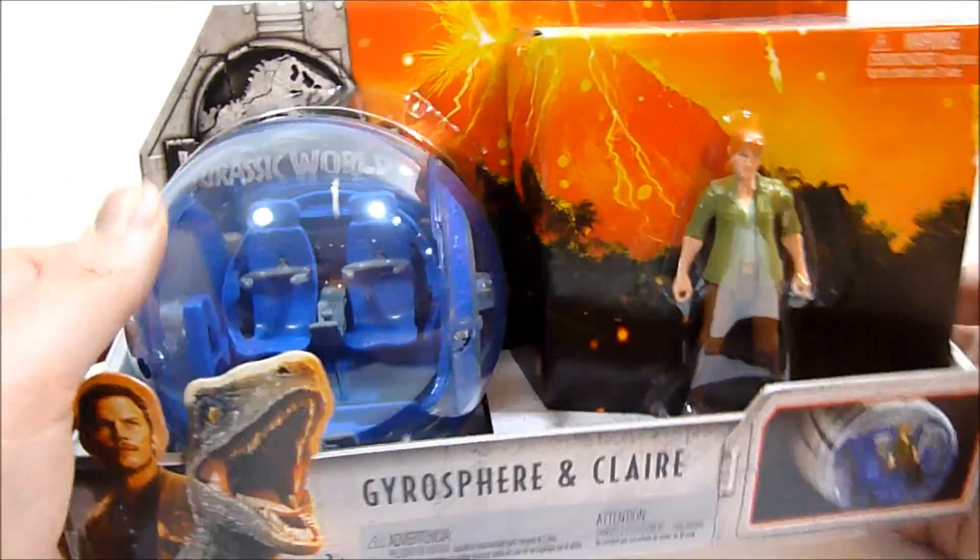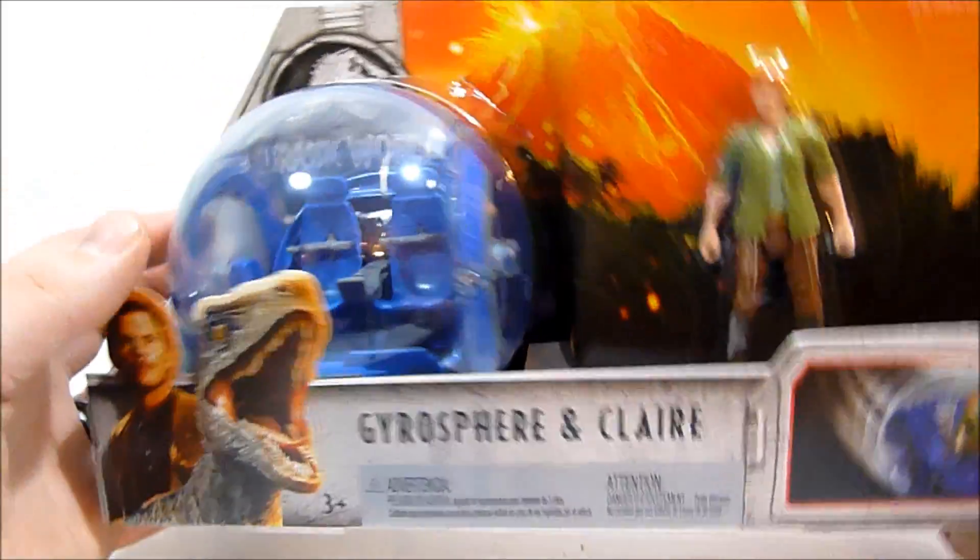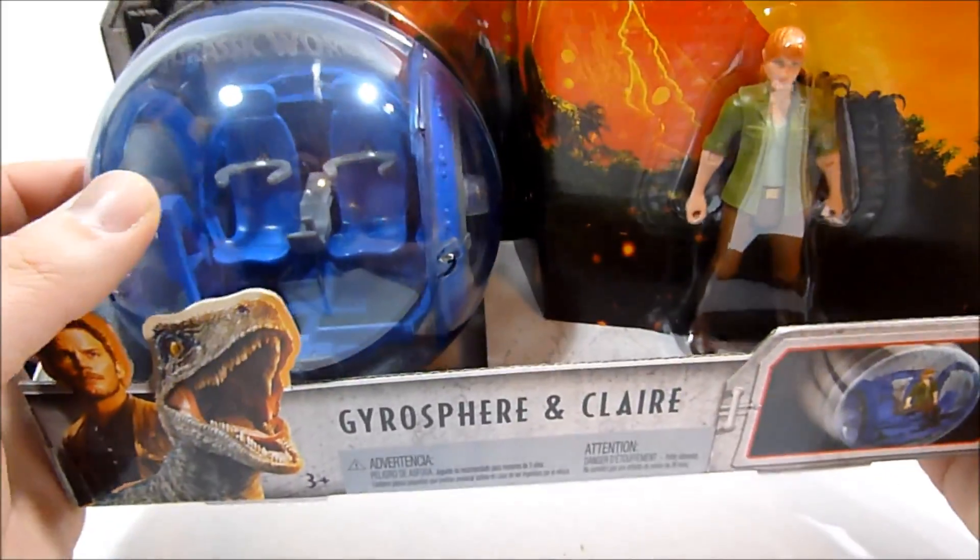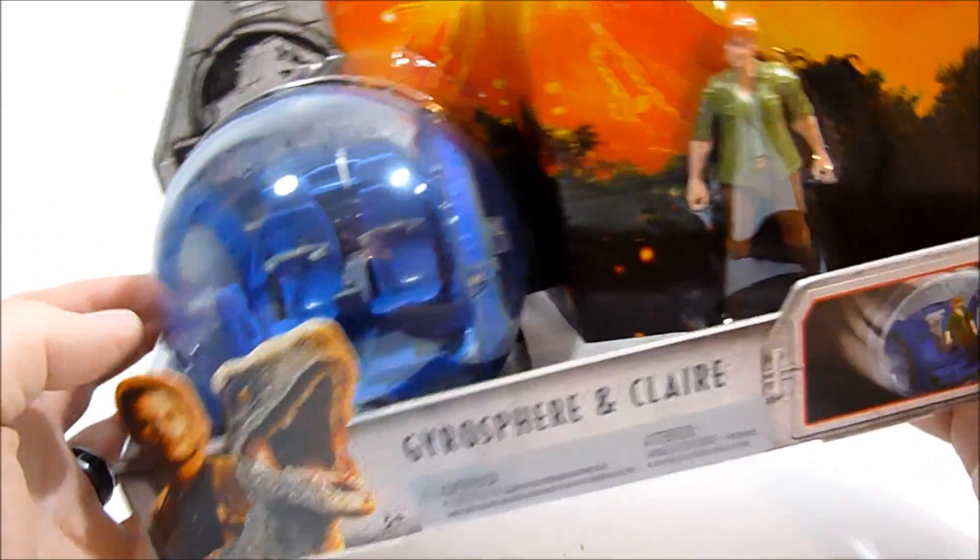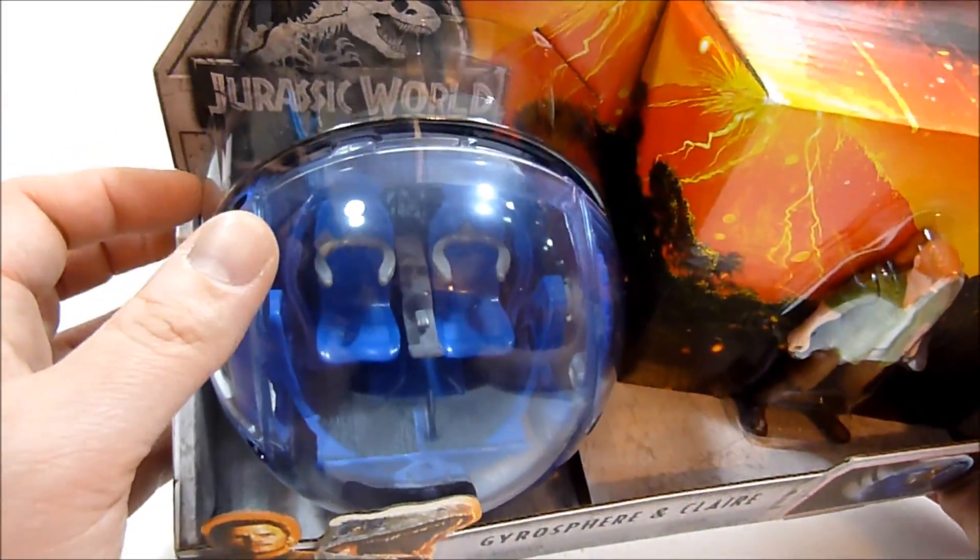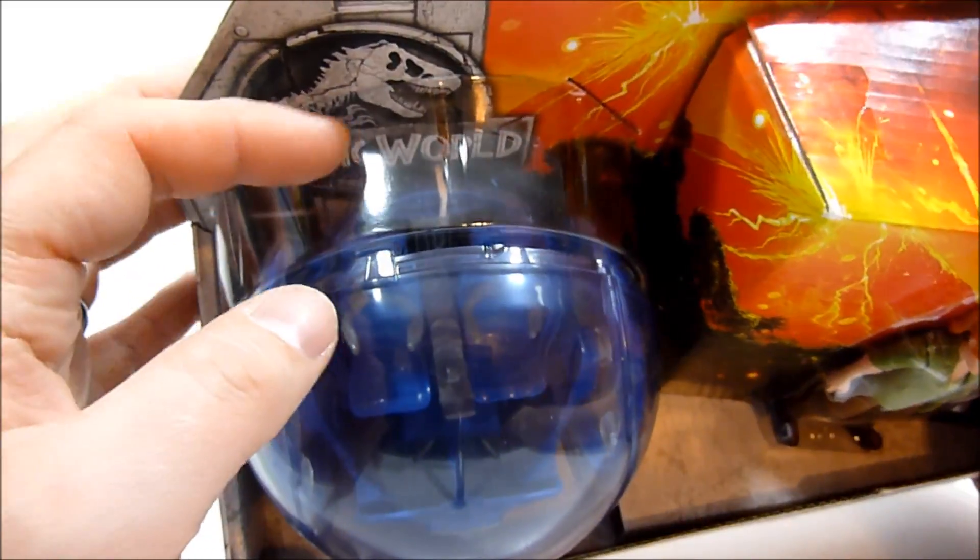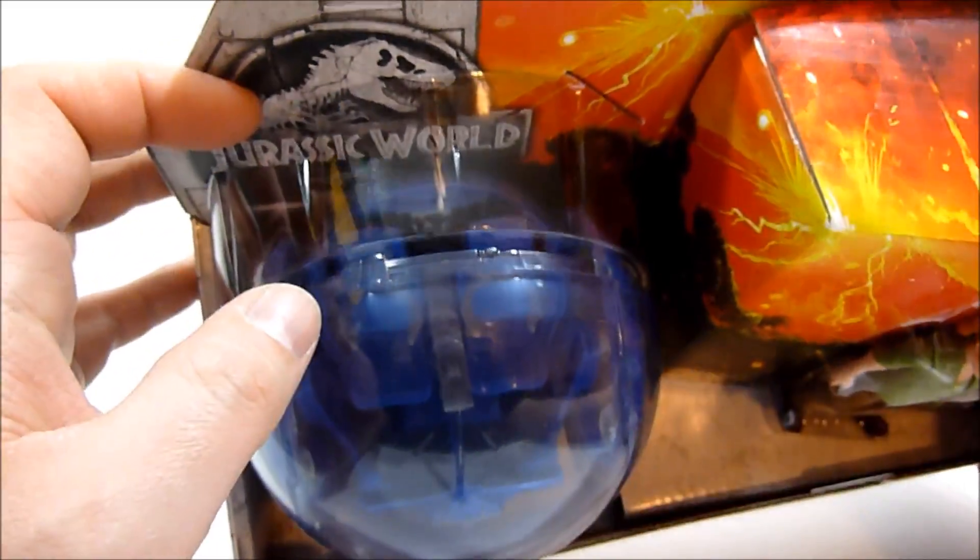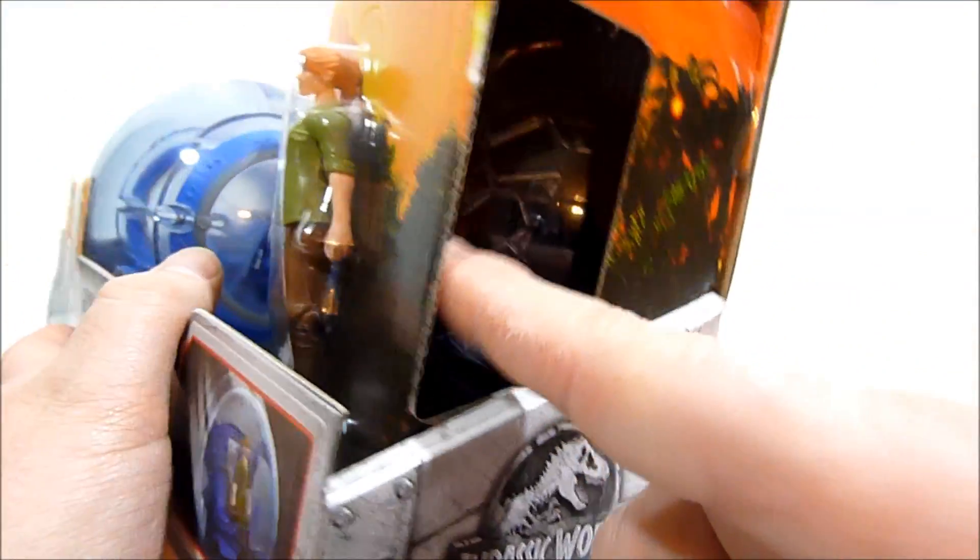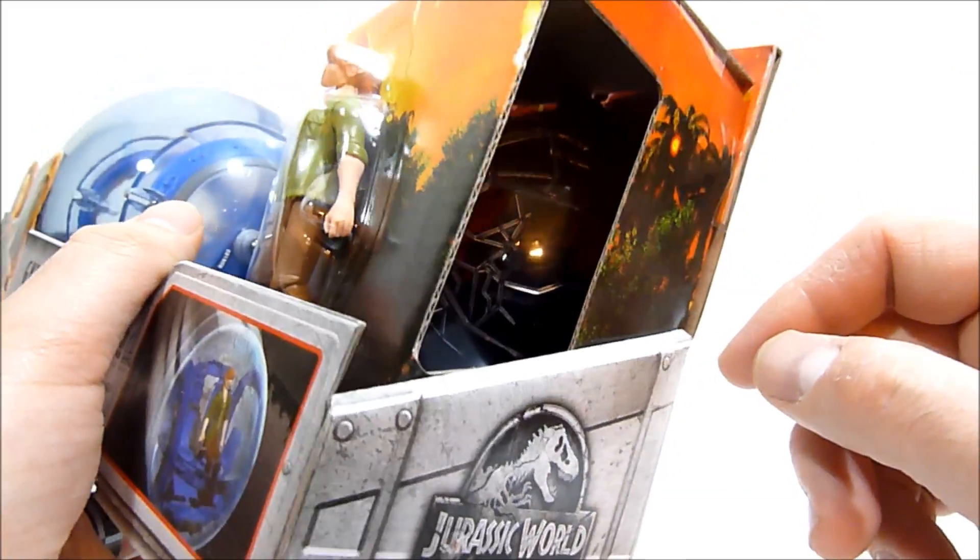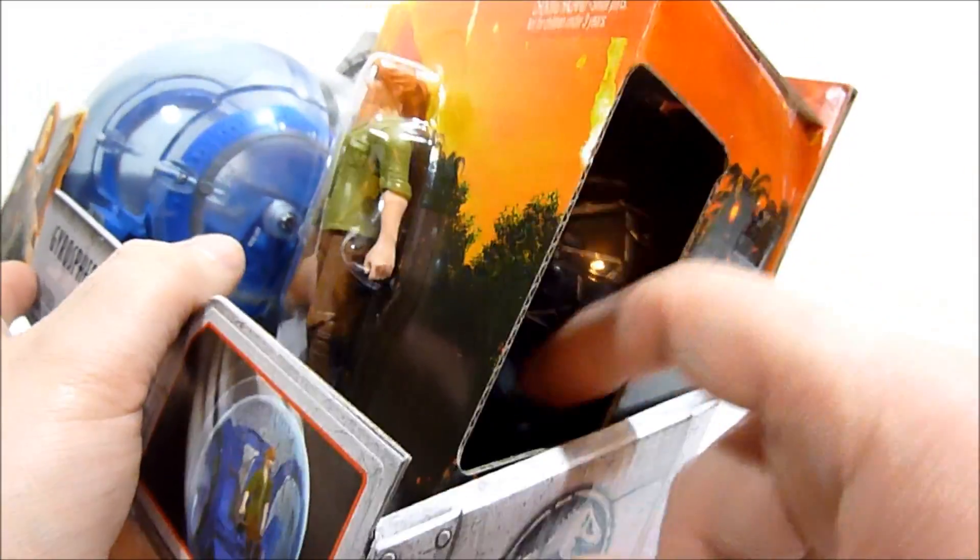Anyway, all that to say, you get a gyrosphere in this set and that's pretty cool. I think it actually kind of gyroscopes a little bit because it does have a little piece of string holding this all together. It does have a top that you can attach to it back here. You can see that it's all cracked and stuff like that. And I don't know how I feel about having a gyrosphere that's always cracked, but whatever.